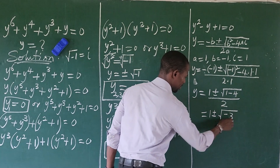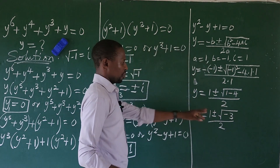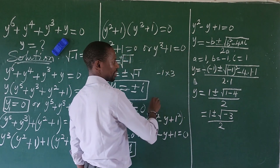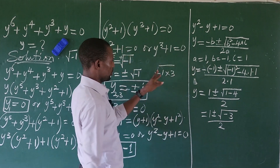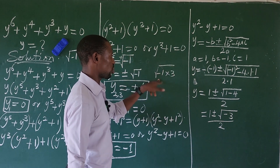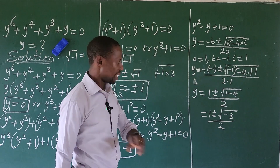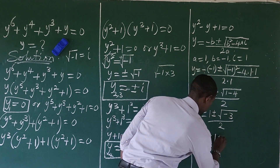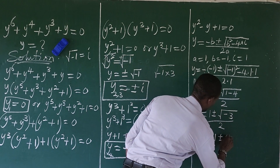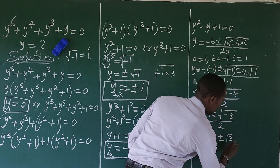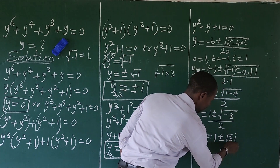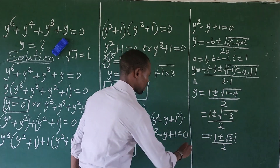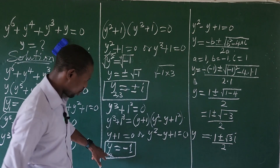We can split −3 into −1 × 3. Recalling that √(−1) = i, we can rewrite the expression as y = [1 ± i√3] / 2. So we have two roots from here: y₅ = (1 + i√3)/2 and y₆ = (1 − i√3)/2.